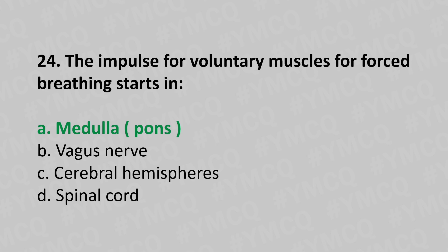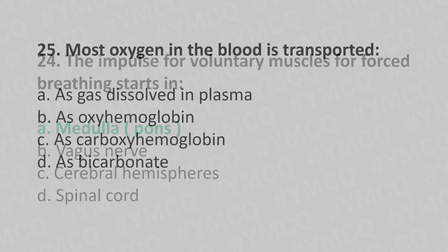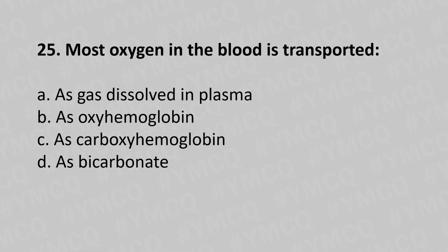Now let's move to question number twenty-five. Most oxygen in the blood is transported: option a, as a gas dissolved in the plasma; option b, as oxyhemoglobin; option c, as carboxyhemoglobin; option d, as bicarbonate. And the answer is option b, as oxyhemoglobin.